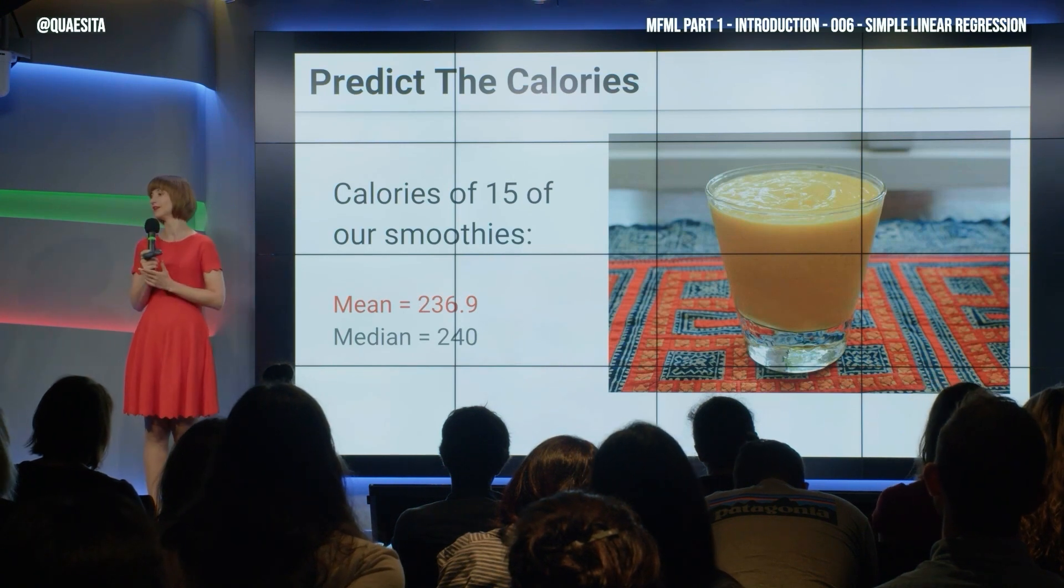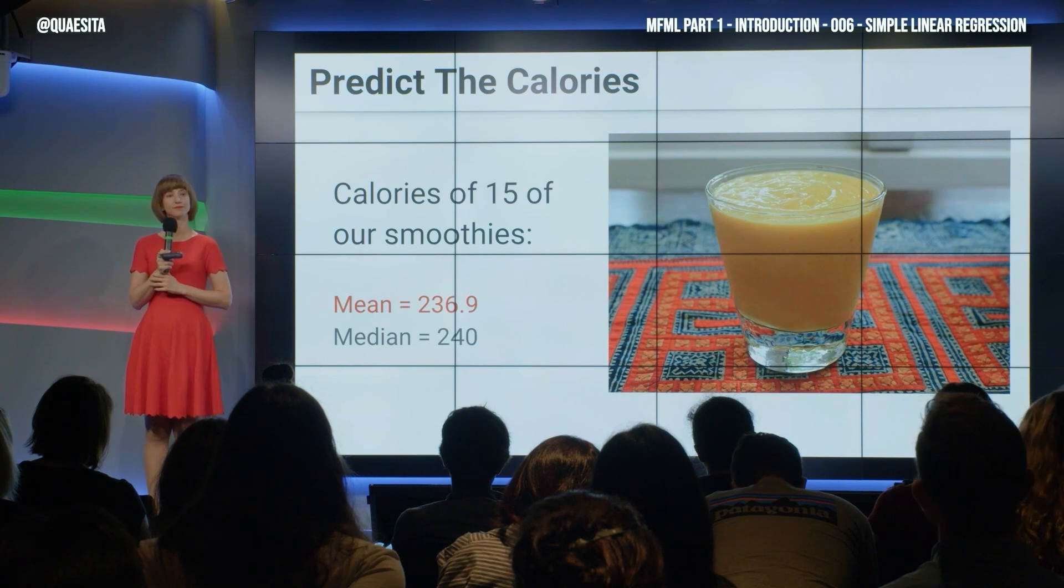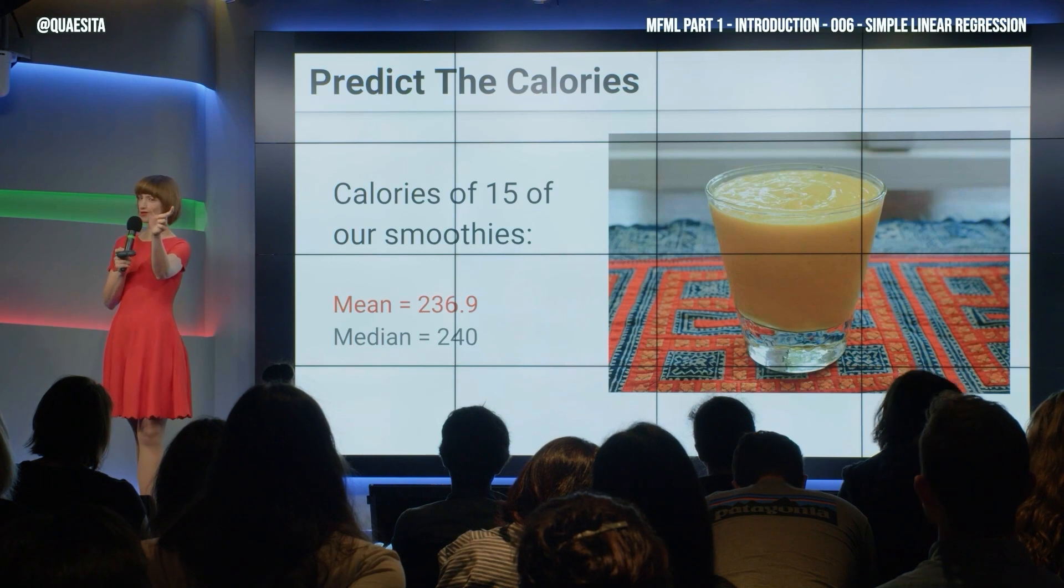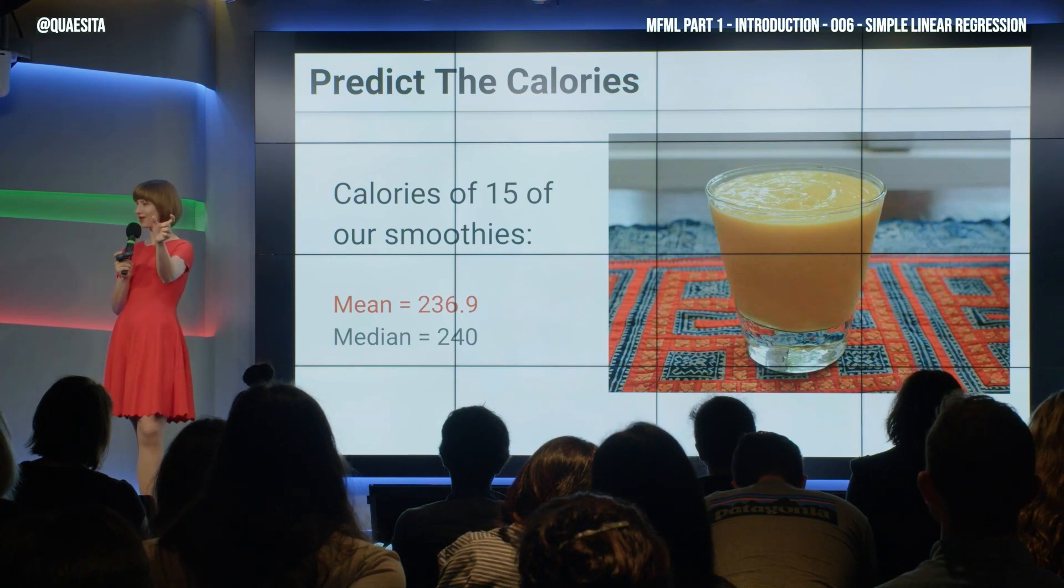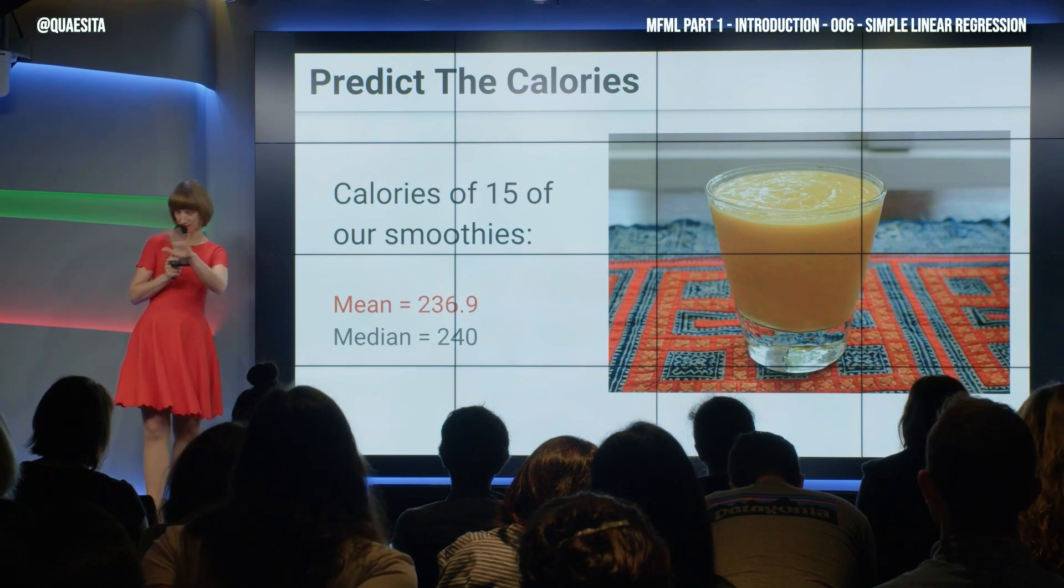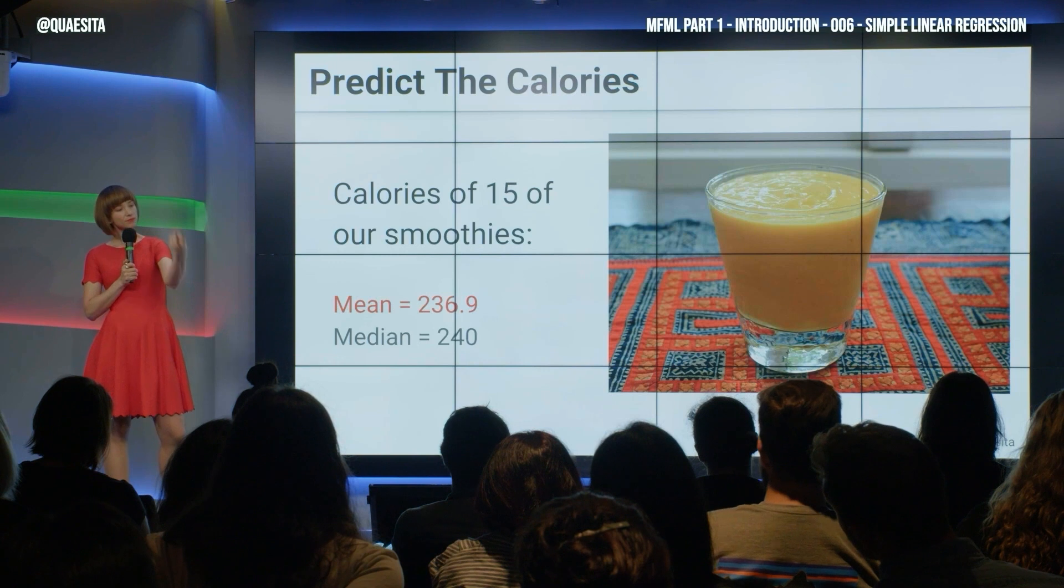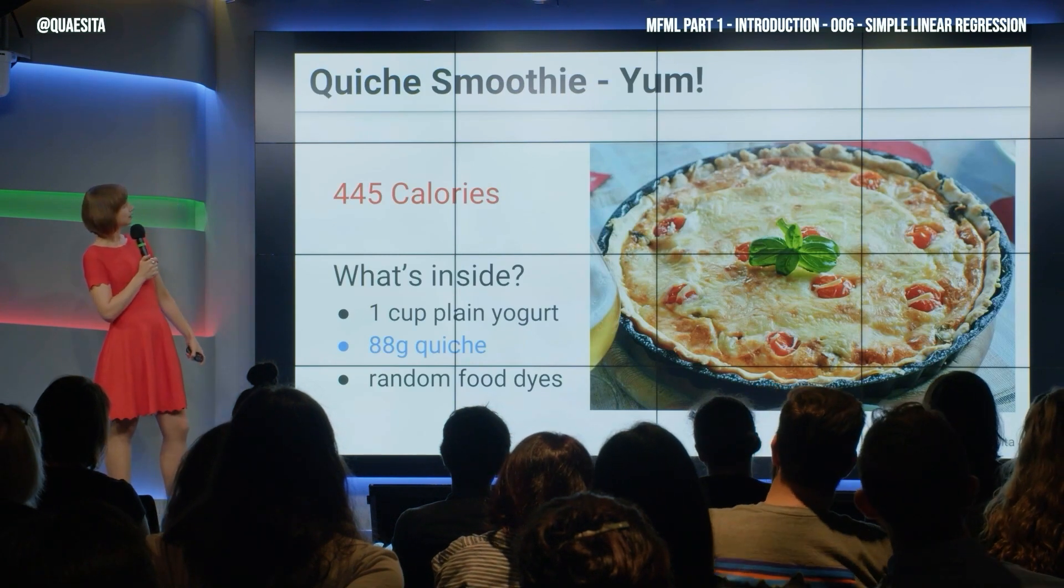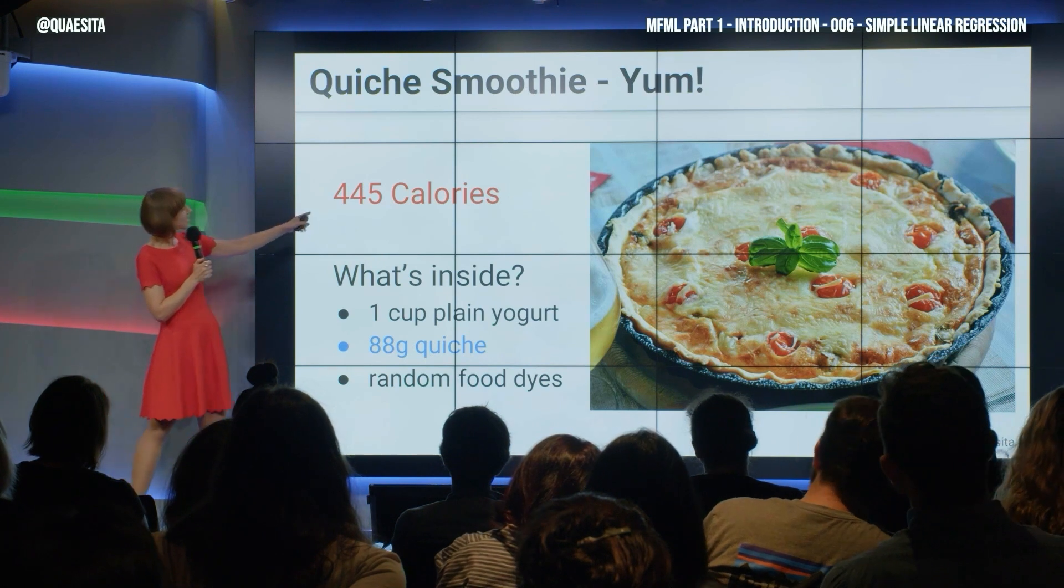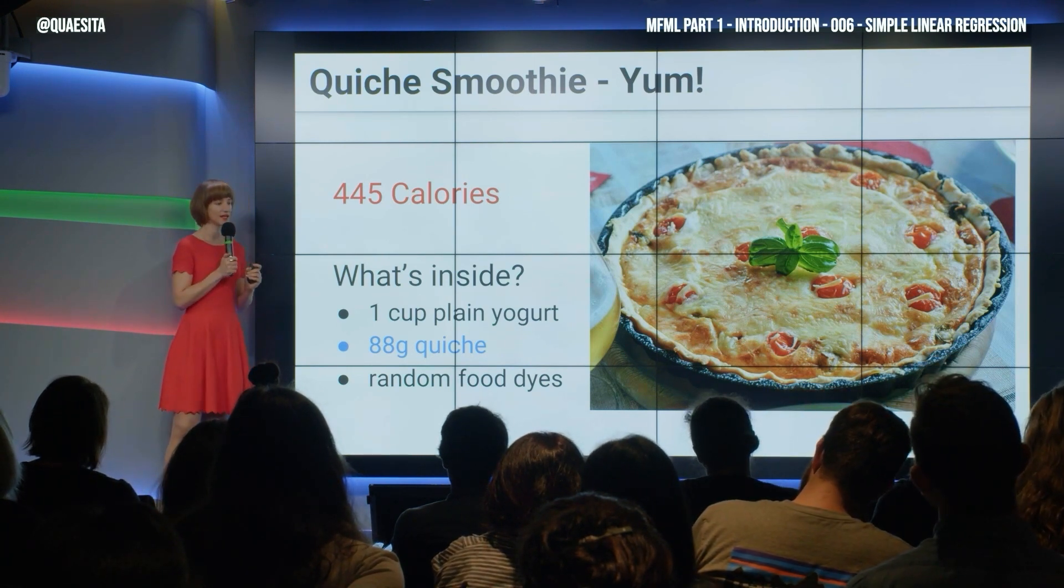Have a guess now as to the calories of this one. 237, I'm hearing, 238, 240. Notice how your range has narrowed a whole lot as I give you more information. That's going to be key to our discussion. I'll go for 237. It turns out to be 88 grams of quiche Lorraine, clocking in at a whopping 445 calories and proving to us that any liquid diet is beatable.